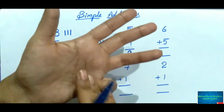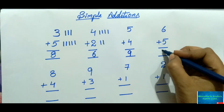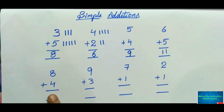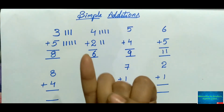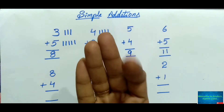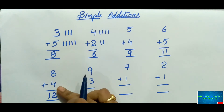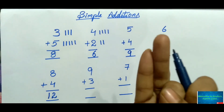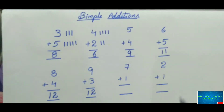For six plus five, keep six in mind and open five fingers: after six — seven, eight, nine, ten, eleven. Eleven is the total. For eight plus four, keep eight in mind and open four fingers: nine, ten, eleven, twelve. The answer is twelve. For nine plus three, keep nine in mind and open three fingers: ten, eleven, twelve. Twelve is the sum of nine plus three.